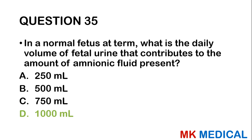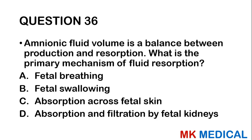Question thirty-six: Amniotic fluid volume is a balance between production and reabsorption. What is the primary mechanism of fluid reabsorption? A, fetal breathing; B, fetal swallowing; C, absorption across fetal skin; D, absorption and filtration by fetal kidneys. The answer is fetal swallowing. In the first trimester, reabsorption is through membrane transudation and absorption; in the last trimester, it's through urination and swallowing.